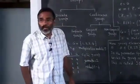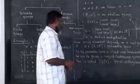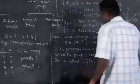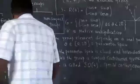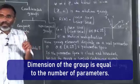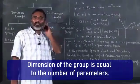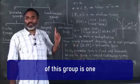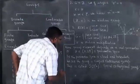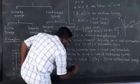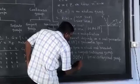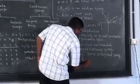The '2' in SO(2) is not its dimension — it only says that the rotations are in two-dimensional space. We also have the concept of the dimension of a group. The dimension of a group equals the number of independent parameters. In this case, the dimension of SO(2) is 1, because there is only one parameter: theta.